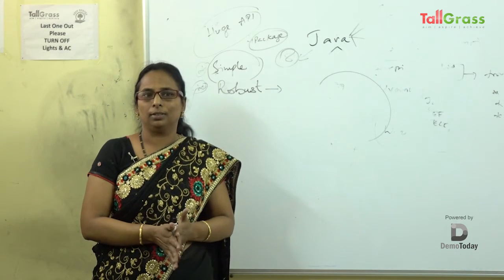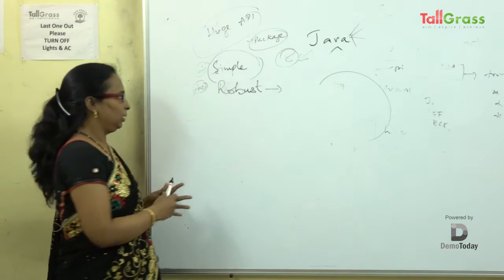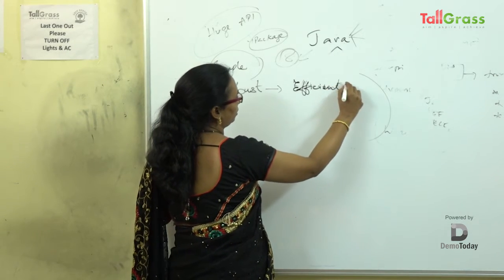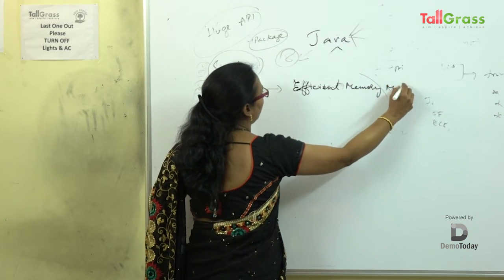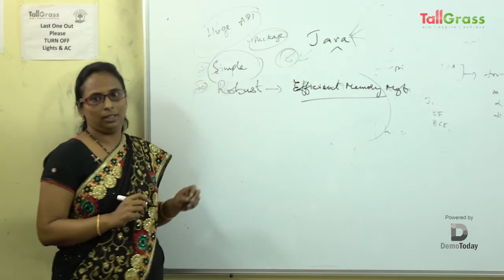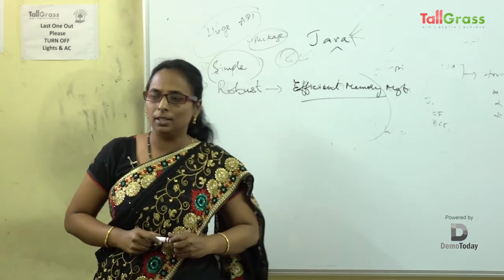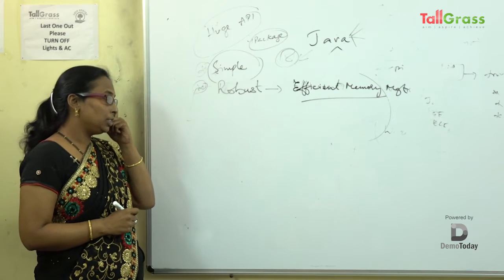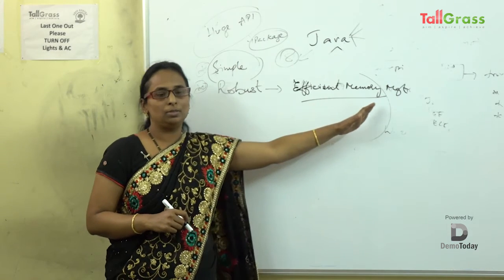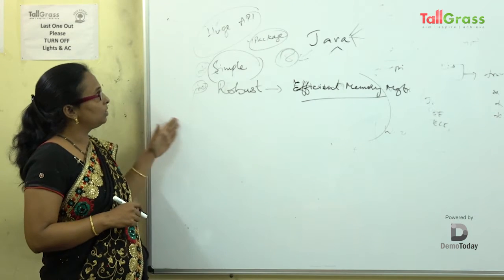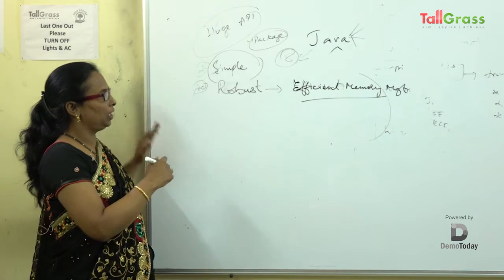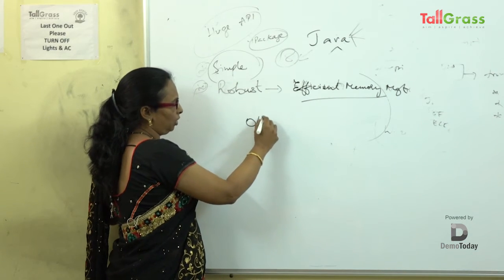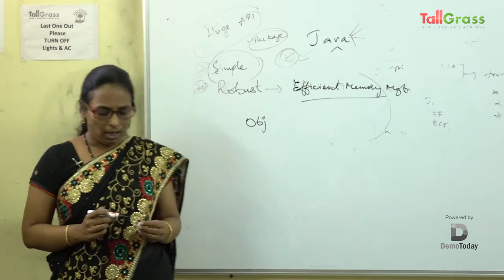What makes Java strong is that Java implicitly maintains an efficient memory management system. This is implicitly maintained, and because of this feature Java is robust. Robust is a very good feature of Java. For example, if I create an object or a variable and after some period of time we are no longer using it, why should memory remain allocated for it?